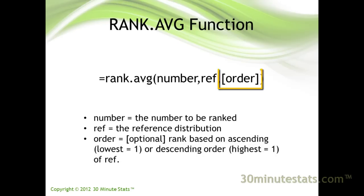The last argument is order. This argument is optional. If omitted or set to zero, Excel ranks the values assuming that the largest value is ranked first, and the next value below the largest would be ranked second, and so on. If order is set to one, then Excel ranks the values assuming the smallest or lowest value is ranked one, and the next value above the smallest would be ranked two, and so on.